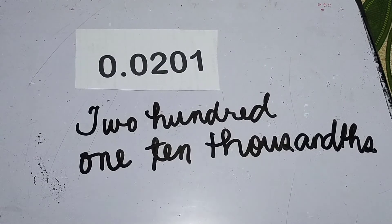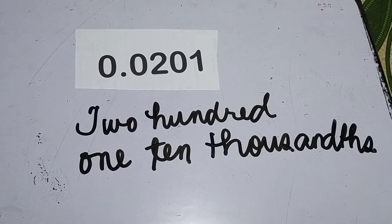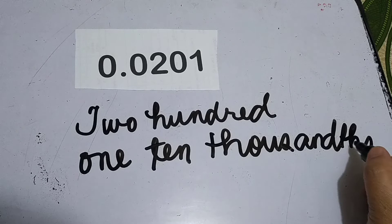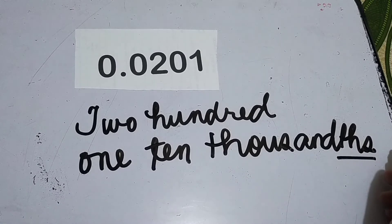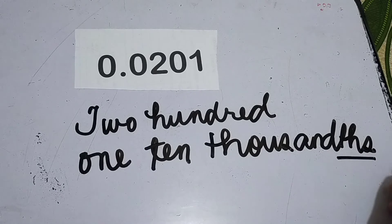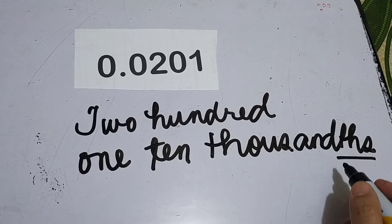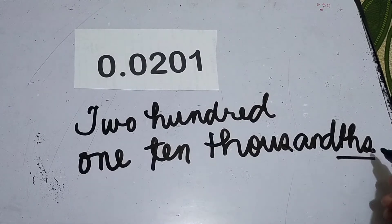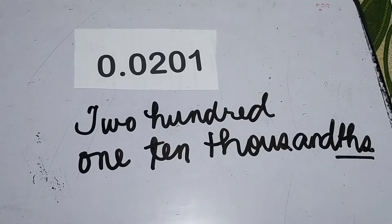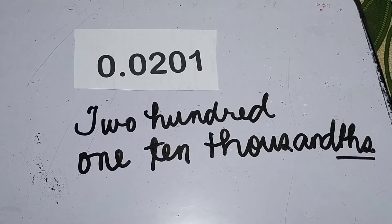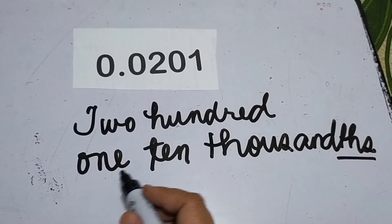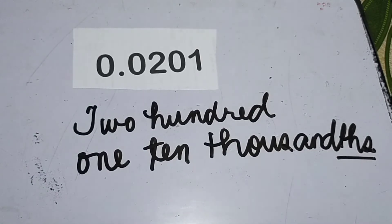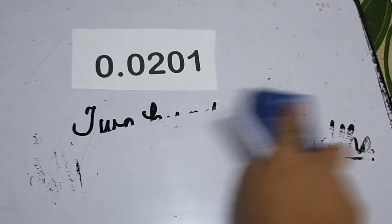If you notice, when it's a decimal number, this ending here has THS, right? Unlike with whole numbers when we're talking about place value, what's at the end is just S. This has THS. So we're talking about decimal numbers: 201 ten thousandths.